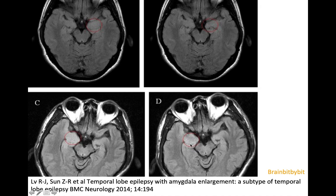In some patients with enlarged amygdala, amygdala hippocampectomy has been performed because of temporal lobe epilepsy. On pathology, findings included gliosis, glioneuronal hamartoma, sometimes tumors, and even findings classified as focal cortical dysplasia type 1 — which is remarkable because the amygdala is not cortex but a nucleus consisting of groups of cells. Apparently the neurons were arranged differently.